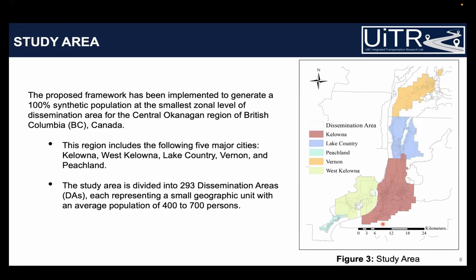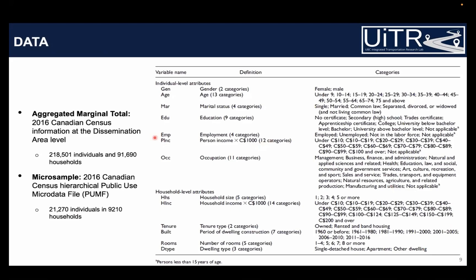The study area is the Central Okanagan region of British Columbia, Canada — in the southern part of BC on the west coast. This region includes five cities: Kelowna, West Kelowna, Lake Country, Vernon, and Peachland. Kelowna is the economic hub and the majority of the population lives and works there. The spatial unit of analysis is the dissemination area from census — the region is divided into 293 dissemination areas, each with an average of 400 to 500 individuals. We use two datasets: the 2016 Canadian Census aggregate marginal totals and the 2016 PUMF micro-sample. The region has around 218,500 individuals in approximately 91,600 households, with detailed PUMF data for about 21,000 individuals in 9,000 households.